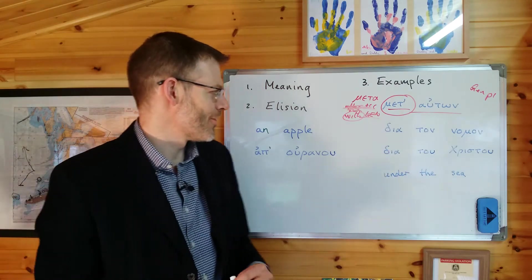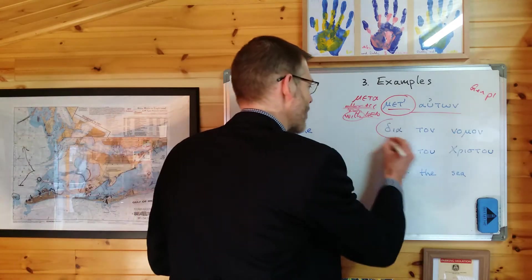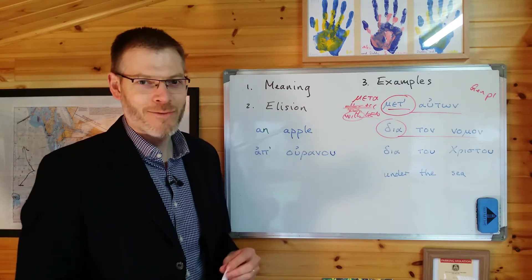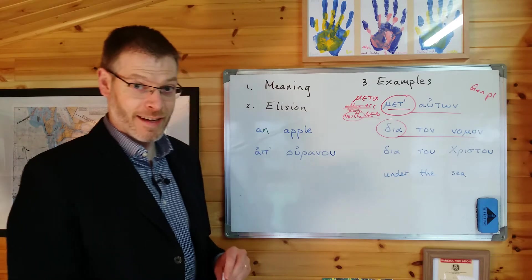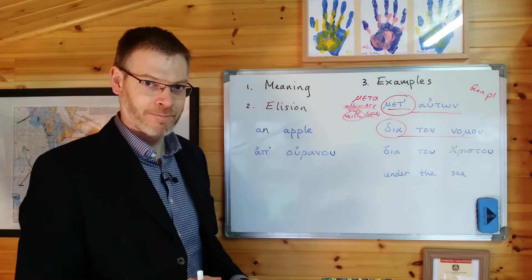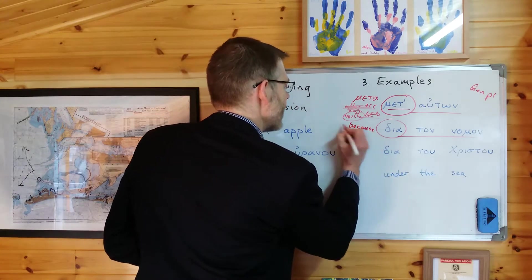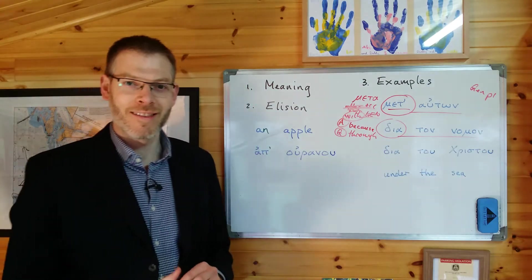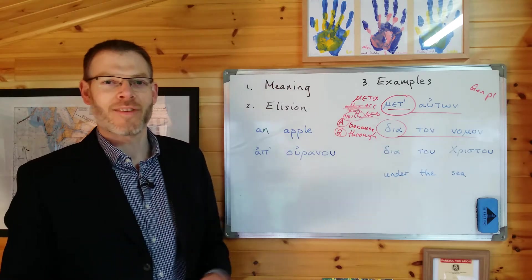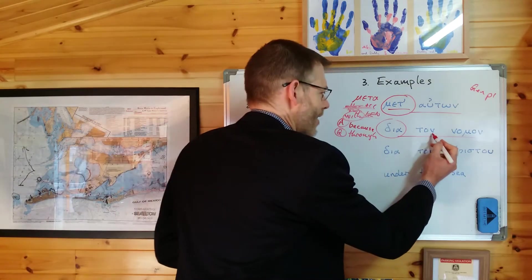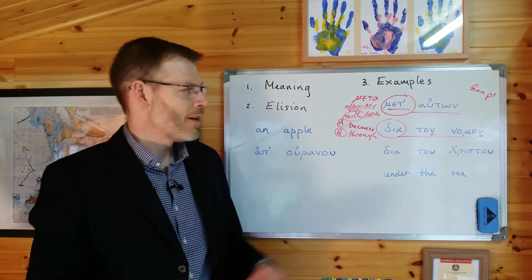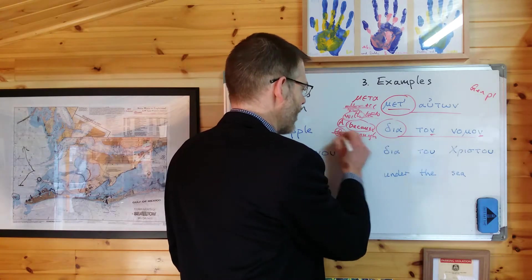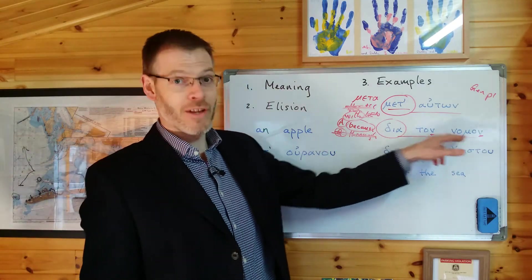Okay, number two: dia ton nomon. Here is the preposition, there is its complement — how do we remember the meaning of dia? I like to think of one of those David Attenborough polar bears walking along thin ice and he says "oh dear" because he fell through the ice. Dia means "because" in the accusative and "through" in the genitive. Now I look at the complement: is this accusative or genitive? You can see for yourself that it's accusative — it comes from ho nomos meaning "the law," and it's ton nomon, accusative. So we select "because" — dia ton nomon means "because of the law."